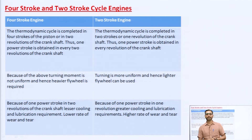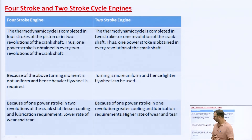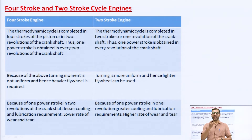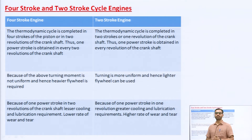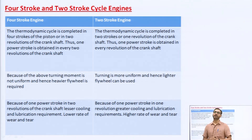Now we will discuss four-stroke and two-stroke cycle engines — what is a four-stroke cycle engine and what is a two-stroke cycle engine. A four-stroke engine, as the name suggests, is an engine in which a complete cycle requires four strokes of the piston. A two-stroke engine is one in which a complete cycle is completed in two strokes of the piston.